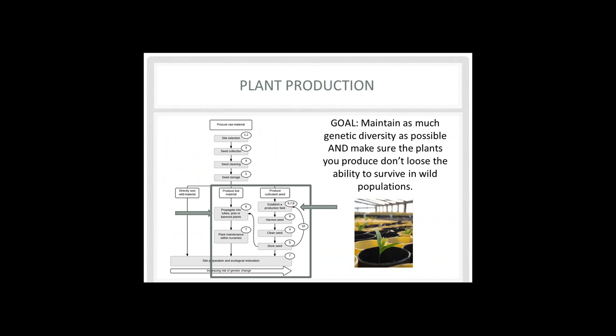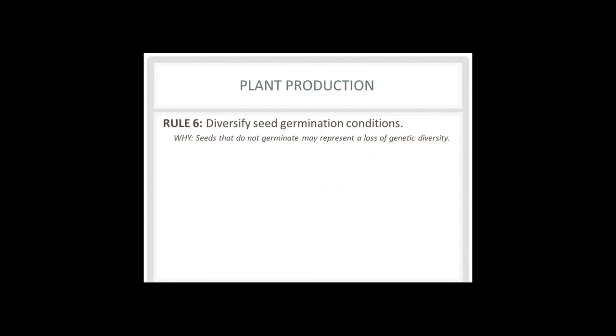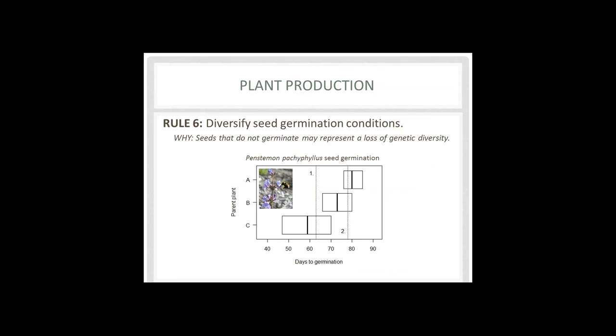Now moving on from actually procuring the raw material to doing plant production — focusing on either propagating plants into tubes or pots if you're producing live material, or establishing a production field. Rule 6: making sure that seed germination conditions are diversified, so we don't have seeds that aren't germinating representing a loss of genetic diversity.